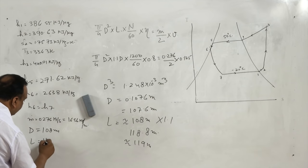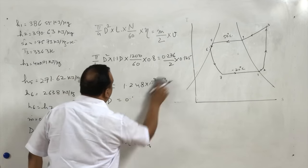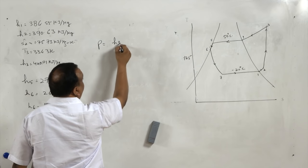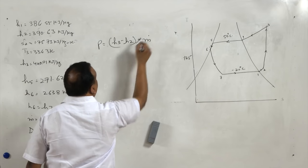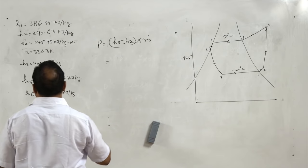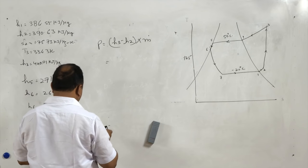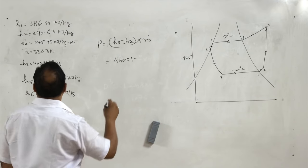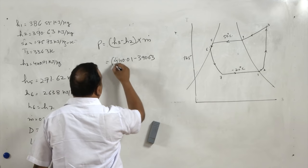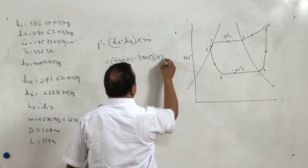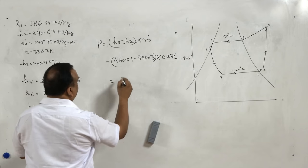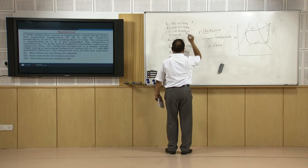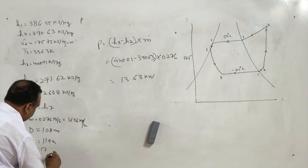The power consumed by the compressor is h3 minus h2 multiplied by the mass flow rate. With h3 equal to 440.01, h2 equal to 390.63, and mass flow rate equal to 0.276 kg per second, the power consumed by the compressor is 13.63 kilowatts.